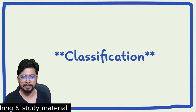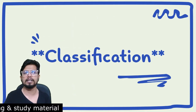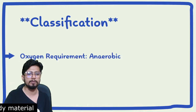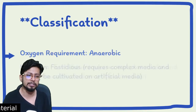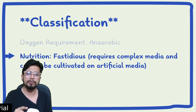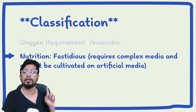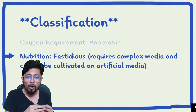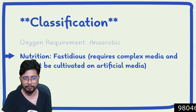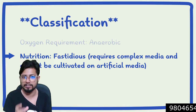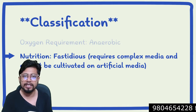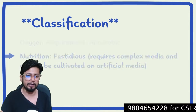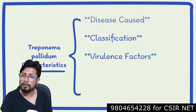The disease caused by Treponema pallidum is syphilis. Based on oxygen availability, it is anaerobic in nature, meaning the presence of oxygen will kill this spirochete. Regarding nutrition, it is fastidious — it requires complex media and cannot be cultivated on artificial media.